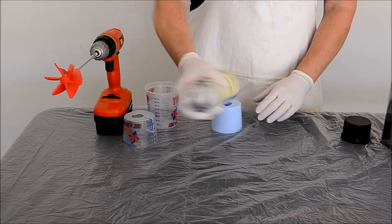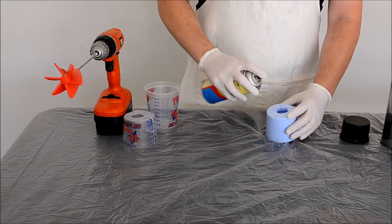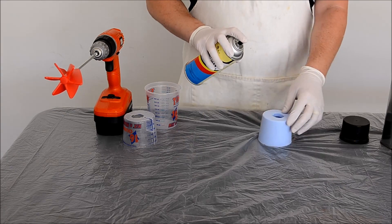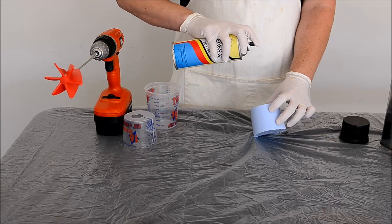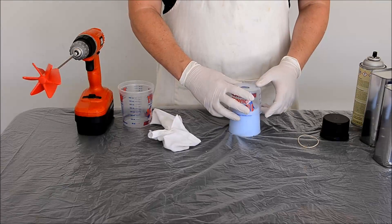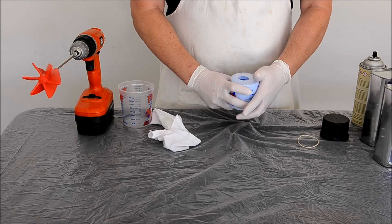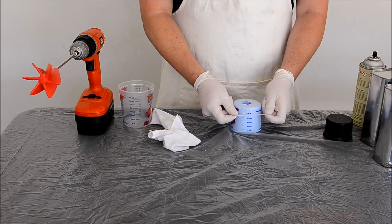Mold release is not necessary when working with silicone molds, but it will help the mold last longer. Use rubber bands or tape to hold your mold together.